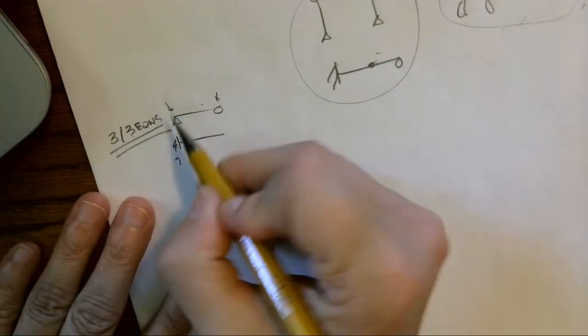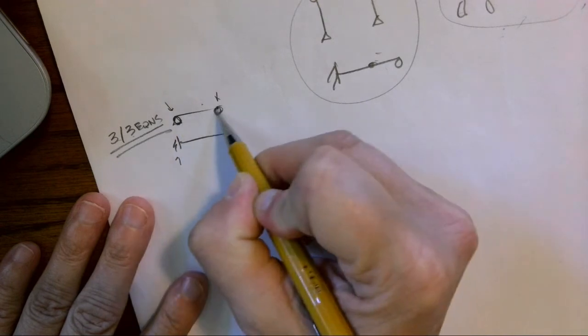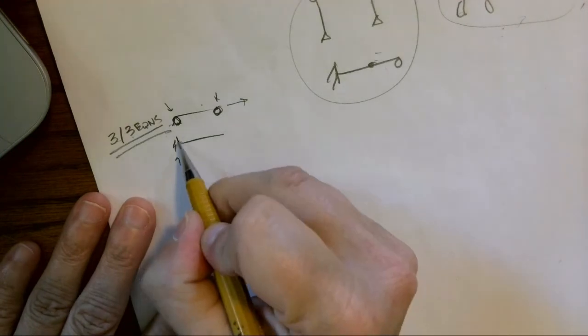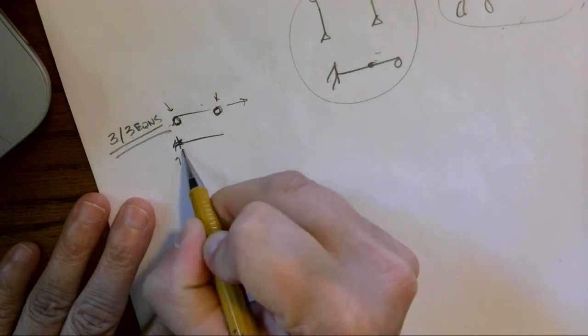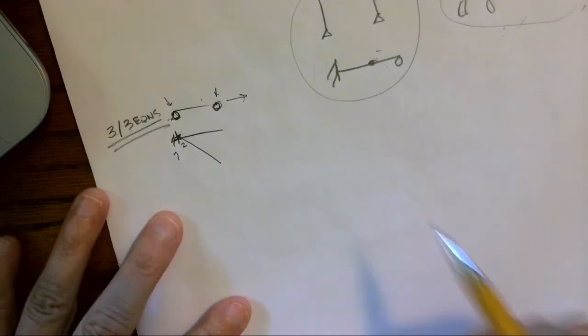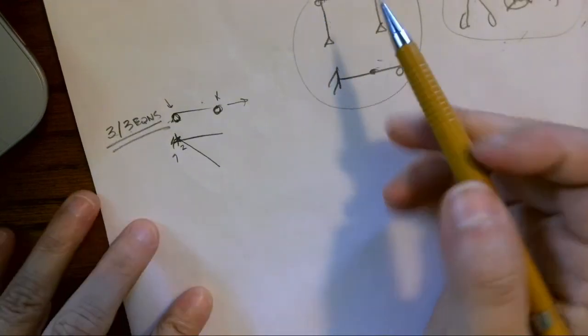If we took this away and made it a skateboard, we'd have two unknowns and this would roll down the street. If this were a pin instead of fixed, so two unknowns, it would just block down like a door.